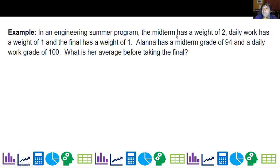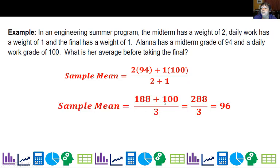In an engineering summer program, the midterm has a weight of two, daily work has a weight of one, and the final has a weight of one. Alana has a midterm grade of 94 and a daily work grade of 100. What is her average before taking the final? We go two times 94, one times 100, divided by two plus one. Alana has an average of 96 before she takes the final.